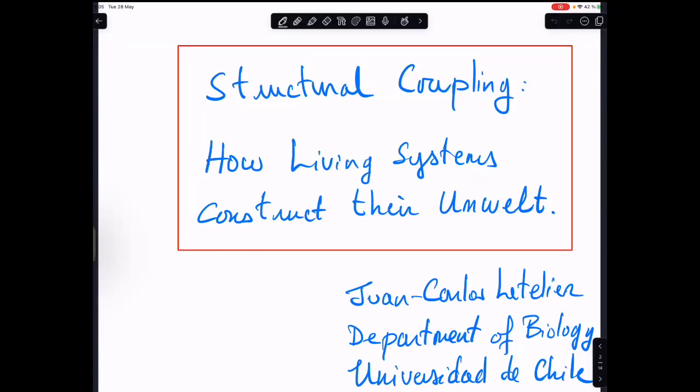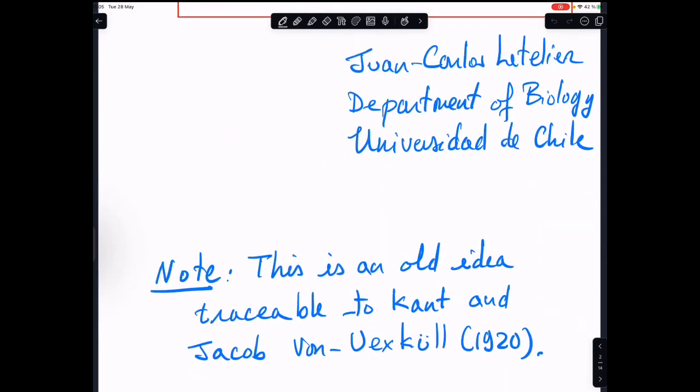I'm going to talk about structural coupling and how living systems construct the objects that they found in the niche. This is an old idea due initially to Kant, and then developed first in the 20th century by Jacob von Wexhul, that living systems are active devices that create their universe.